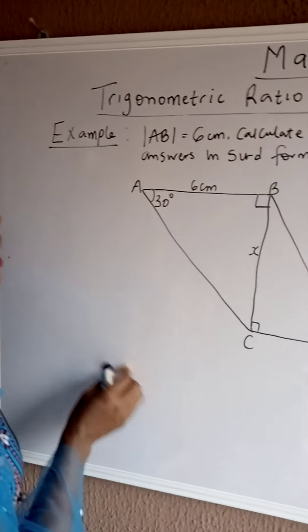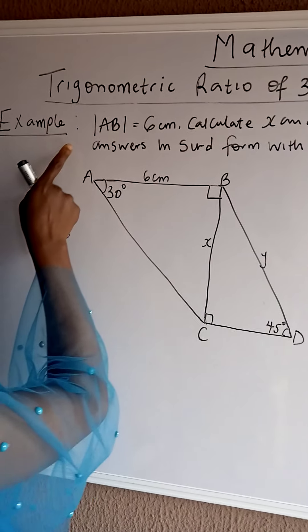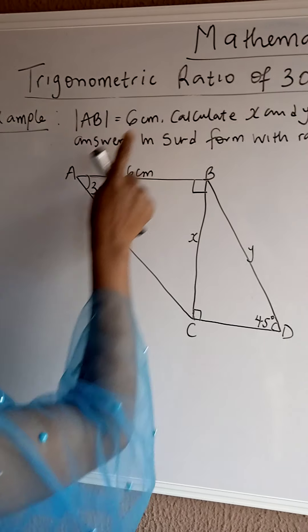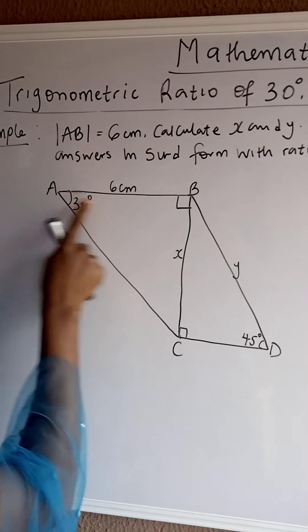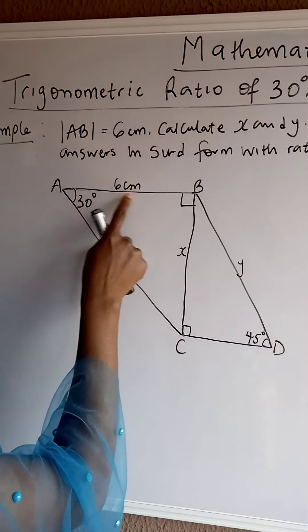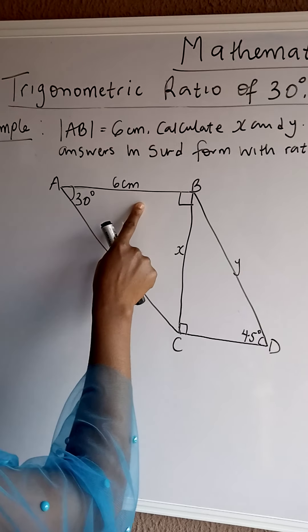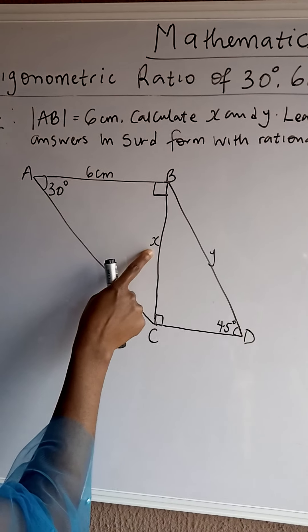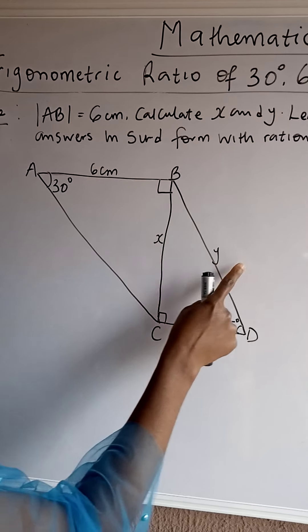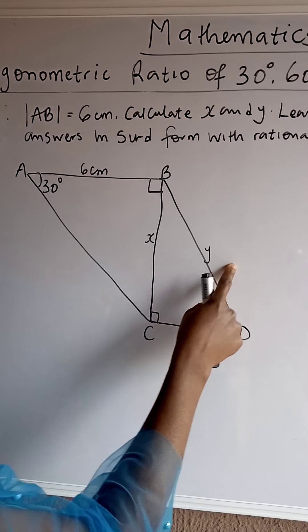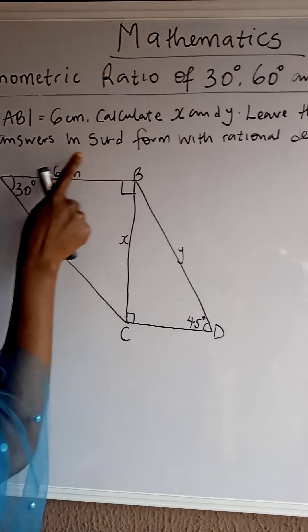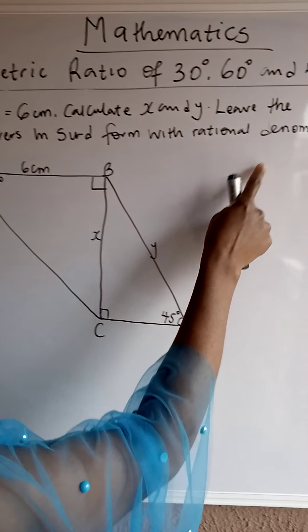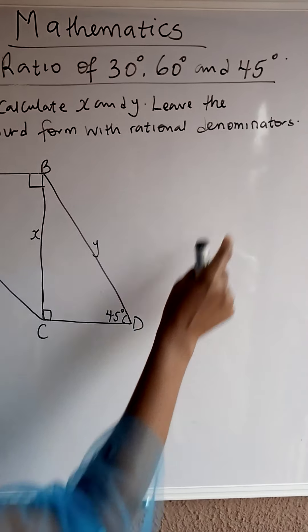The question says: line AB is equal to 6 cm. Calculate X and Y. Leave the answers in surd form with rational denominators.